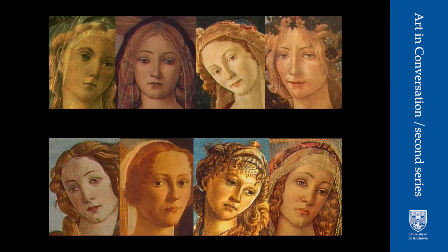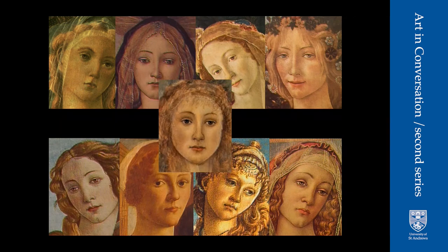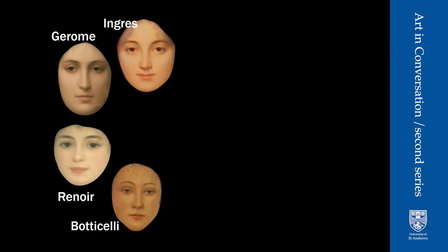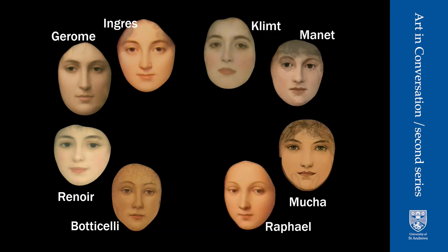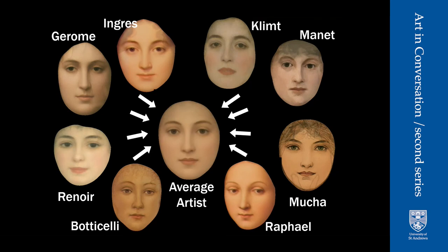I want to go on from averageness and talk about exaggeration. Here we've got portraits done by Botticelli — eight female faces, combined into a computer average at the centre. Individual features like the droopy eyelids present in most of his images come through, along with a sepia colour and the triangular shape of the jaw, which is quite unusual. We can do this for different artists, averaging the paintings of women each artist did, and combine all of these to create a representation of the average artist — how women were painted across many different artists.